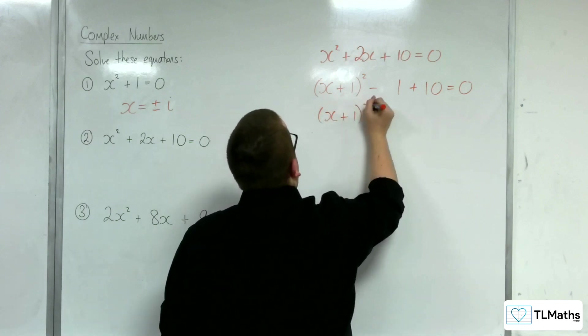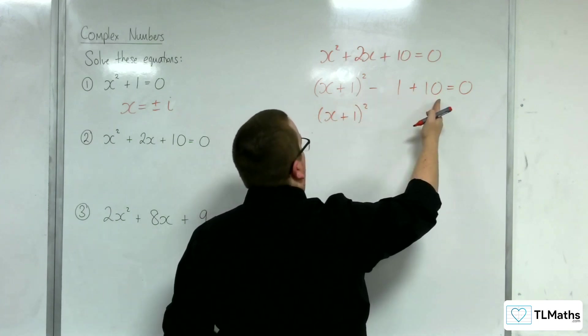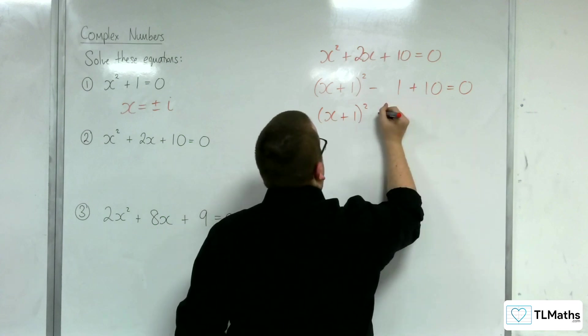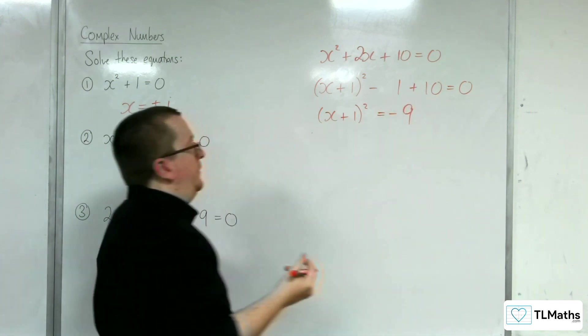So, I've got x plus 1 squared. Now, I've got minus 1 plus 10, which is 9. Take that from both sides. We get minus 9 on the right-hand side.